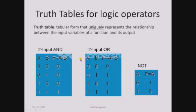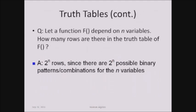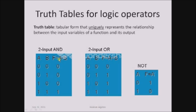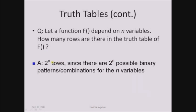The truth table gives us the relationship between the input and output using the possible combinations of the input. If a function depends on n variables, the number of rows in the truth table is 2 power n. In the previous example with two variables, 2 power 2 equals 4 rows. There are 2 power n possible binary patterns or combinations for n variables.